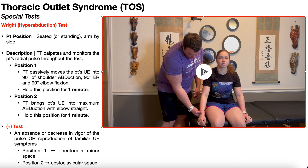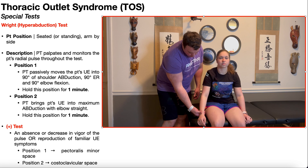Once you're accurately assessing the patient's radial pulse, you're going to take the patient passively into two positions. The first position, position one, is where the PT passively moves the patient's upper extremity into 90 degrees of shoulder abduction, 90 degrees of external rotation, with 90 degrees of elbow flexion.